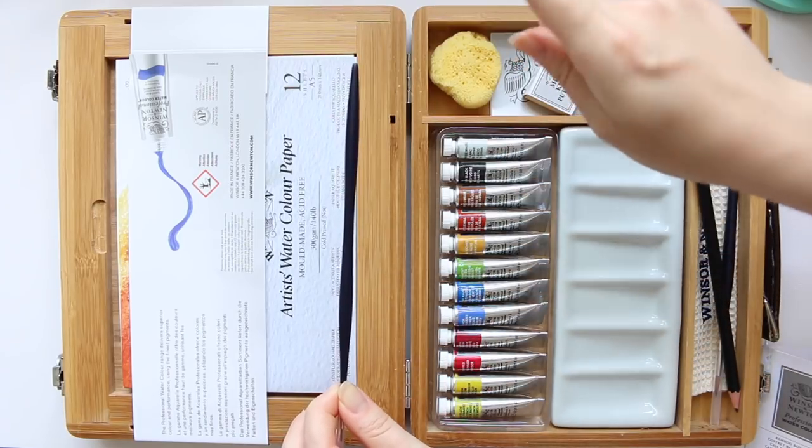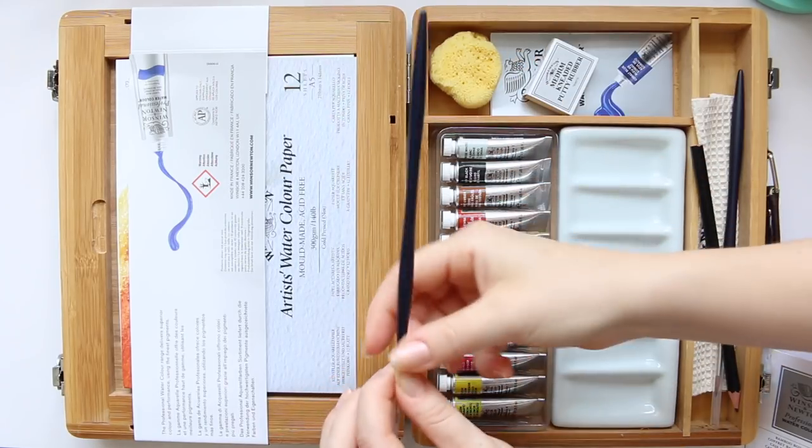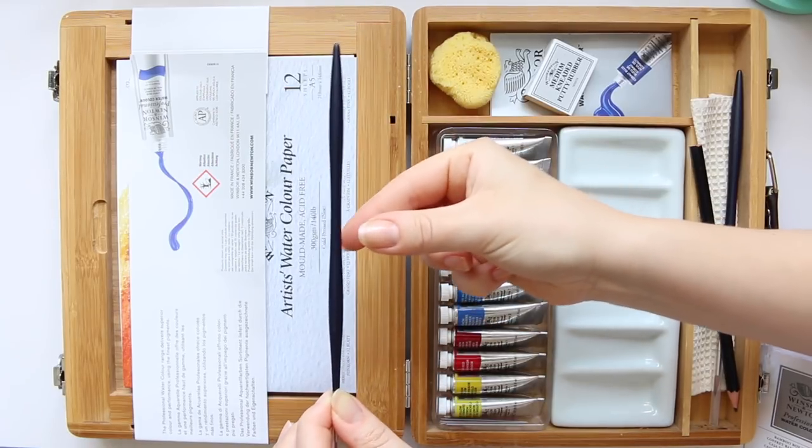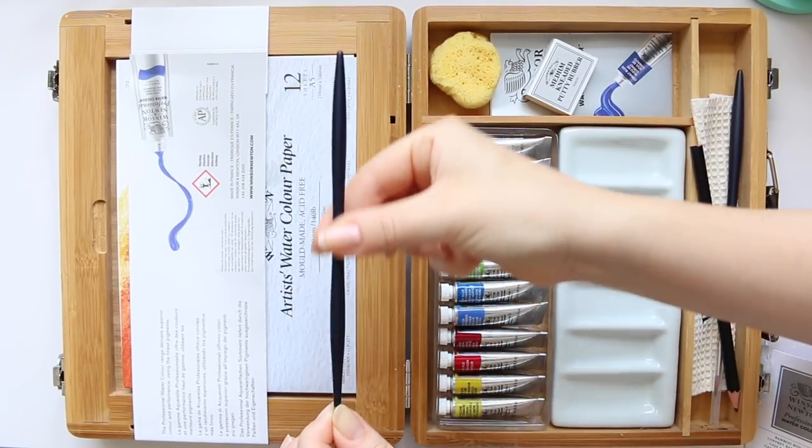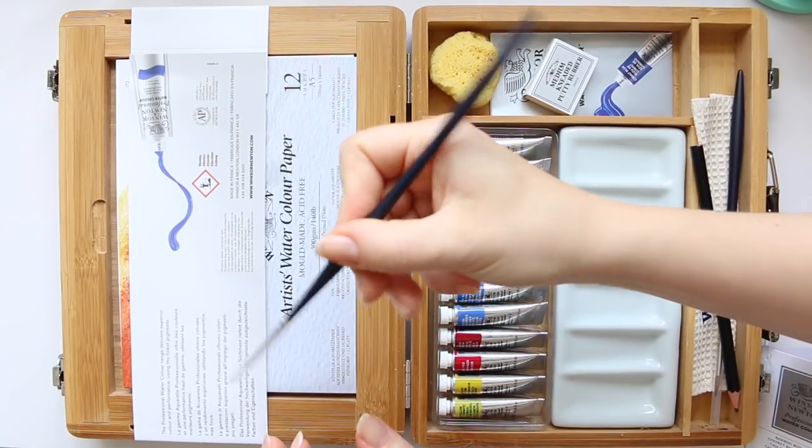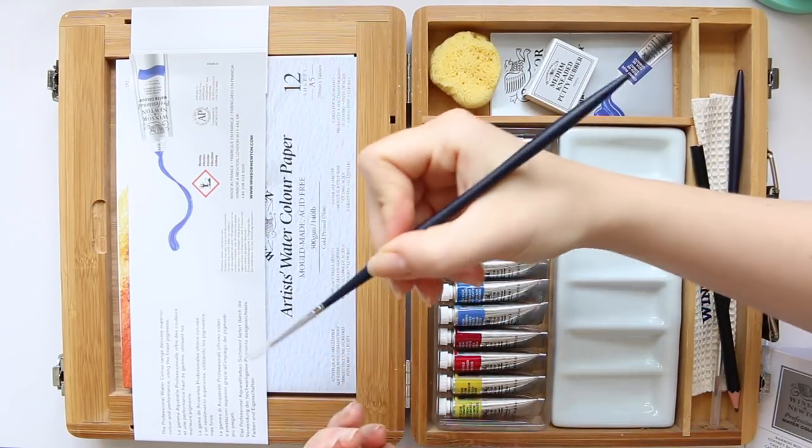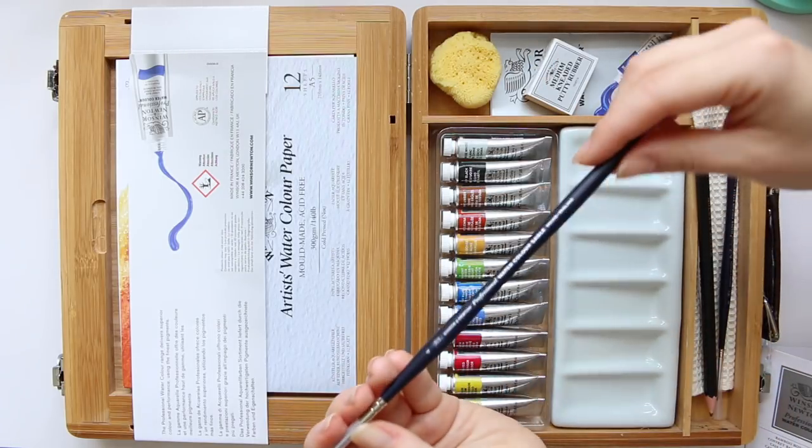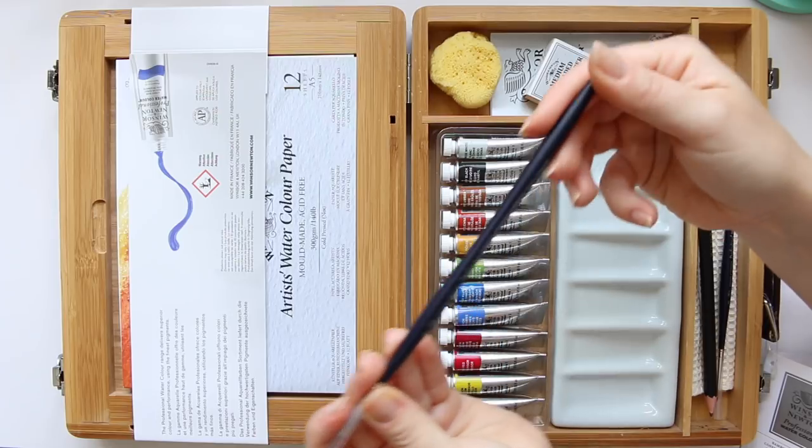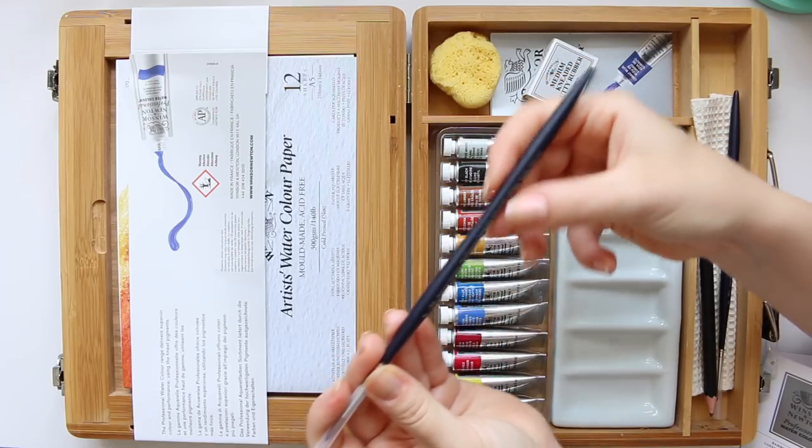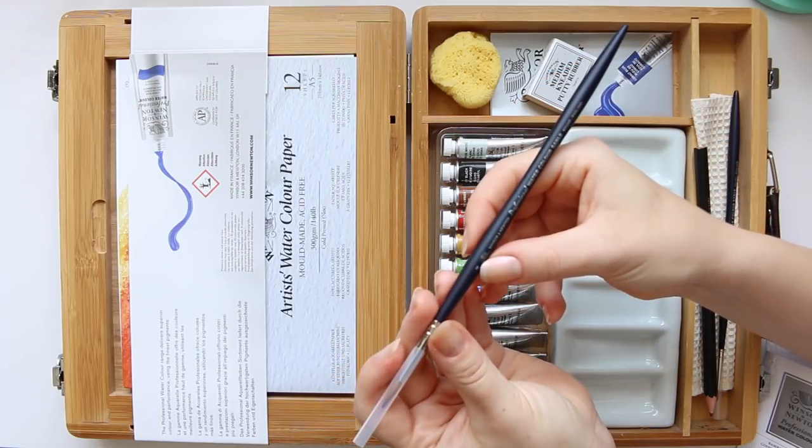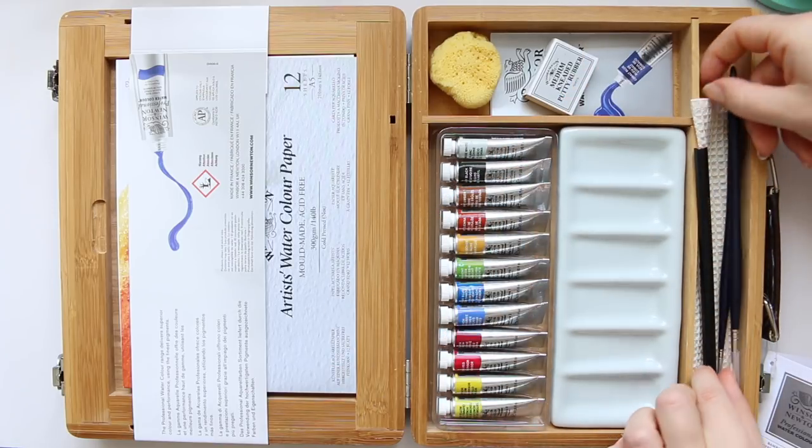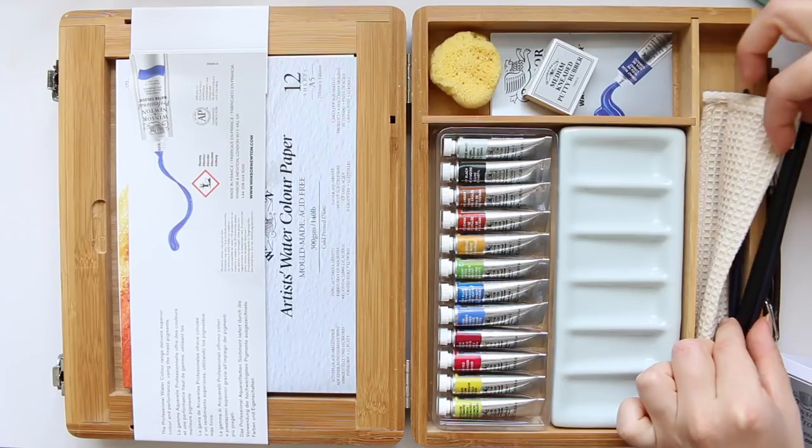So it feels quite nice in your hand holding it, very light. The second brush that comes with it is the same wrench, so it's also a sable brush and it's a size four. So it's a round four and a round zero.